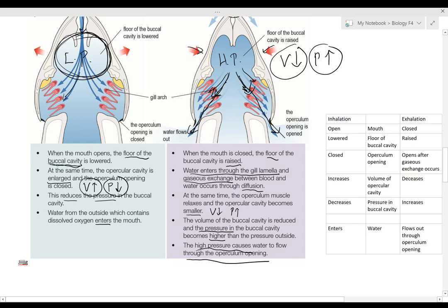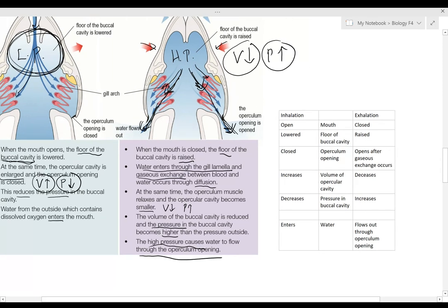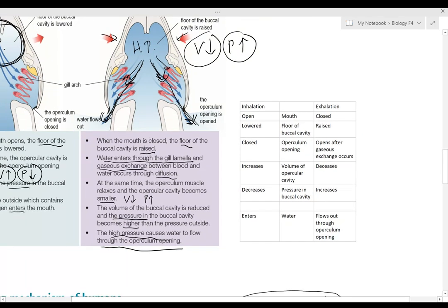So here I have a summary of the process. You start with the mouth being open or closed, and the action happens at the buccal cavity. The floor of the buccal cavity is either lowered or raised. Then what happens to the operculum opening? When volume increases, the pressure decreases, and when the volume decreases, the pressure increases.